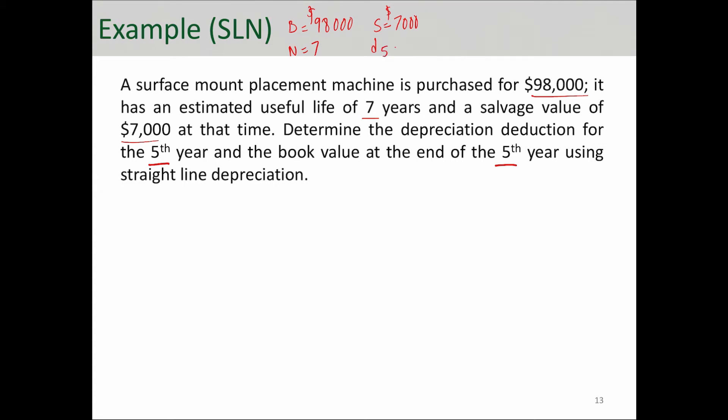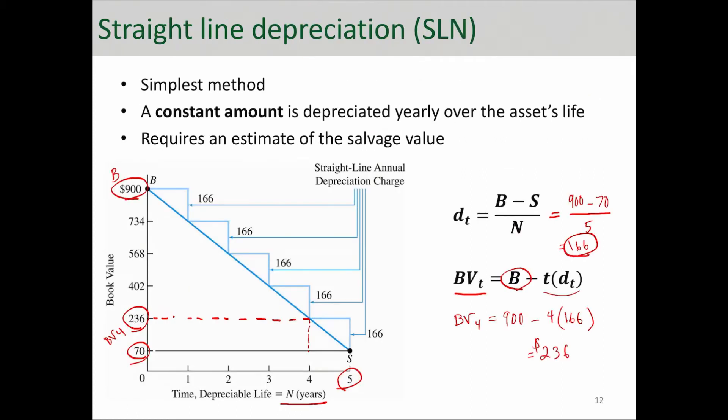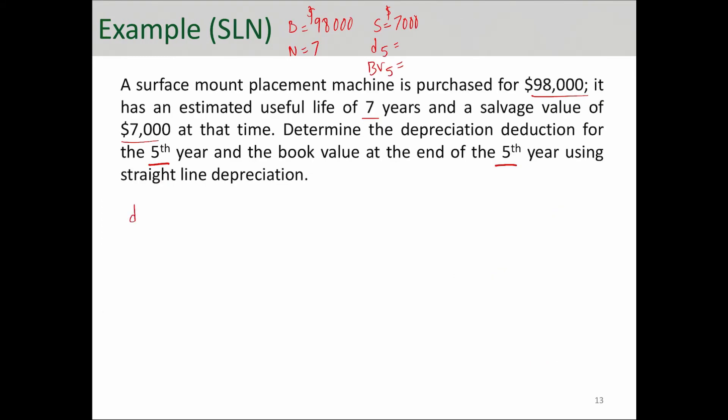Well, we can simply follow the formulas that we have here. Depreciation deduction for year five is essentially the same as depreciation deduction for any other year. It is equal to B minus S over N. In this case, $98,000 minus $7,000 divided by seven. And when you calculate that, that is $13,000, which means every year you're estimating to depreciate the value of this asset for $13,000.